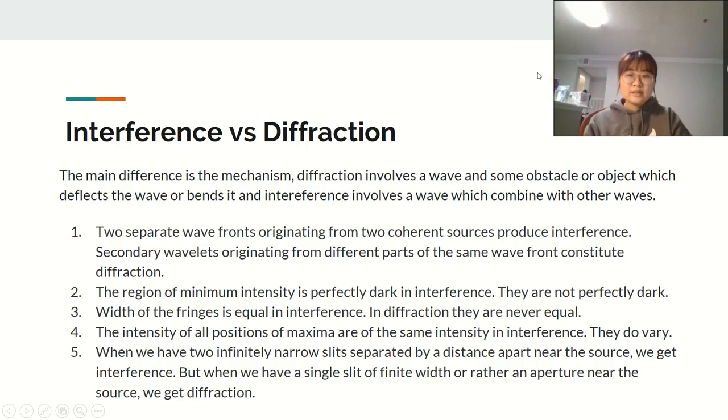So lastly, I will talk about the difference between interference and diffraction. The main difference is the mechanism. Diffraction involves a wave and some obstacle or object which deflects the wave or bends it. And interference involves a wave which combines with other waves.